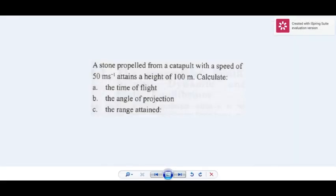Projectile motion. A stone propelled from a catapult with a speed of 50 meters per second attains a height of 100 meters. Calculate the time of flight, the angle of projection, and the range attained.